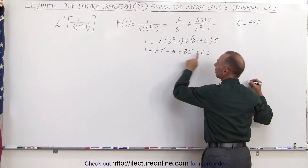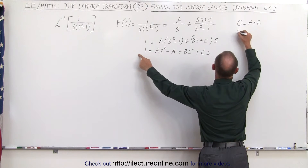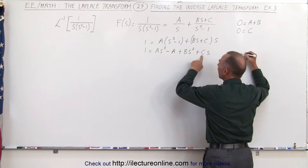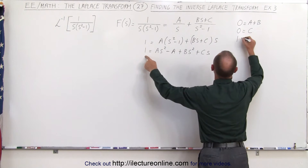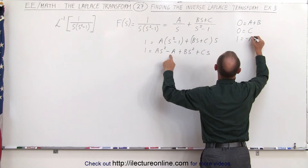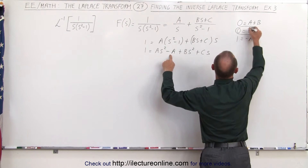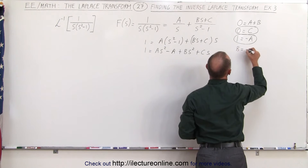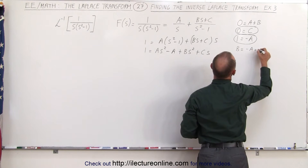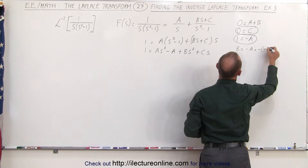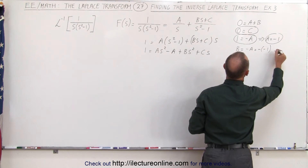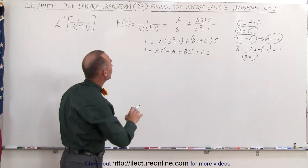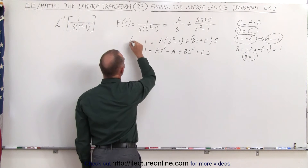We have one s term on the right but none on the left, which means 0 equals c. And finally, 1 equals minus a, so a equals minus 1. Since b equals minus a, that means b equals 1.